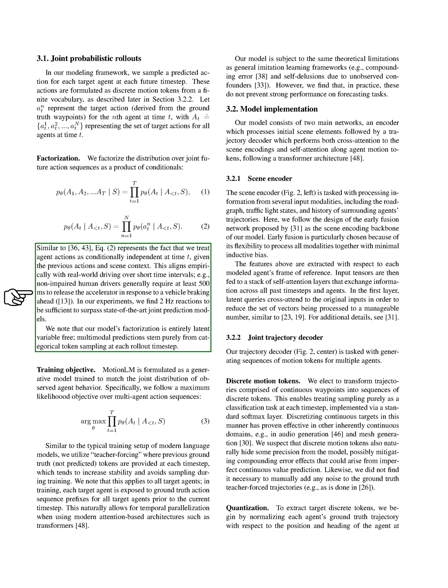Section Training Objective. We've developed a generative model called MotionLM, which is designed to mimic the observed behavior of multiple agents. The model is trained to maximize the likelihood of multi-agent action sequences. This is similar to how modern language models are trained, where we use teacher forcing. This means we provide the model with the correct previous actions at each step, rather than predicted ones. This approach tends to make the training process more stable and eliminates the need for sampling during training. In our training process, each agent is exposed to the correct action sequence of all other agents up to the current time step. This allows for parallel processing when using modern attention-based architectures. However, our model does have the same theoretical limitations as other imitation learning frameworks, such as the potential for compounding errors and self-delusions due to unobserved factors. Despite these limitations, we've found that our model performs well in practice on forecasting tasks.